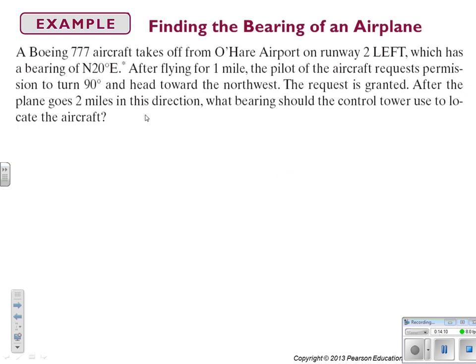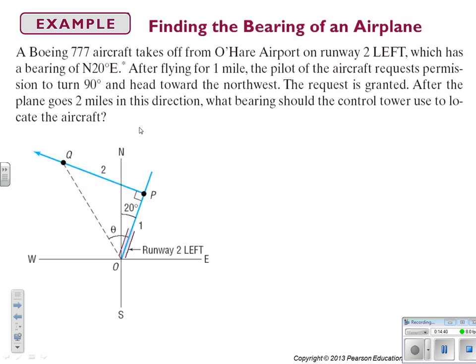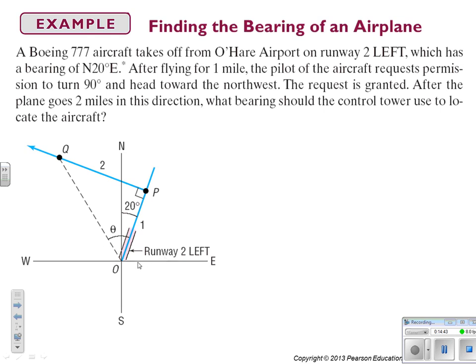All right, let's do a little bit more. Boeing 777 aircraft takes off from O'Hare Airport on runway 2 left, which has a bearing of north 20 degrees east. After flying for one mile, the pilot of the aircraft requests permission to turn 90 degrees and head towards the northwest. Oh, that's coincidental because we know how to do right triangle trigonometry. The request is granted after the plane goes two miles in this direction. What bearing should the control tower use to locate the aircraft? Step number one draw your picture. Okay, so here's the runway. We take off and we go a mile and then we turn 90 degrees and head off for two miles.